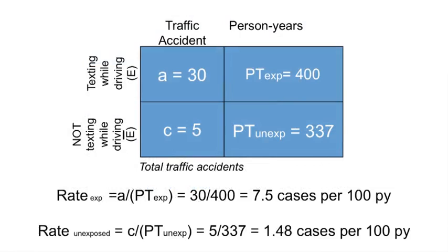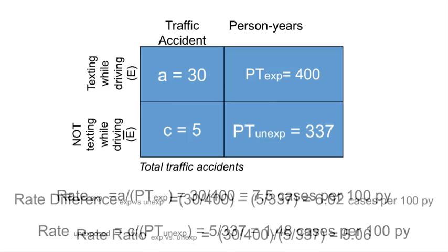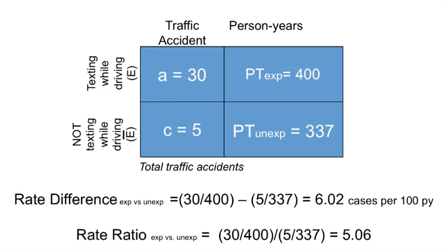Now to calculate the rate in the exposed group — the texters — you divide 30 by the total number of person years, 400, to get 7.5 cases per 100 person years. The rate in the unexposed group is 5 divided by 337 person years, which gives 1.48 cases per 100 person years. To calculate the rate difference, you subtract to get 6.02 cases per 100 person years. To get the rate ratio, you divide the rate in the exposed by the rate in the unexposed to get 5.06.